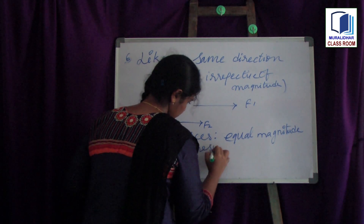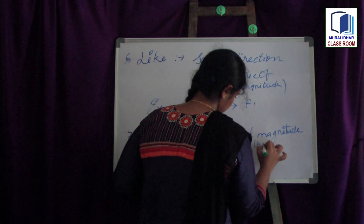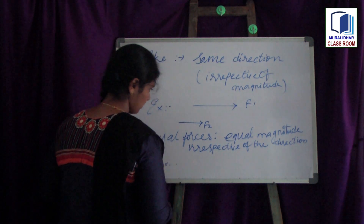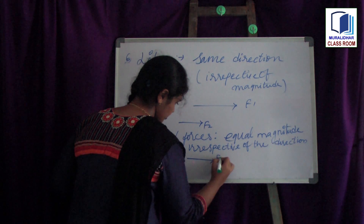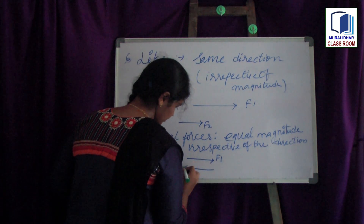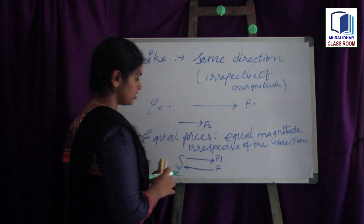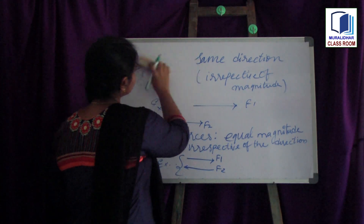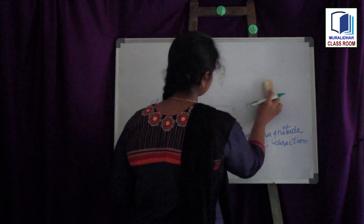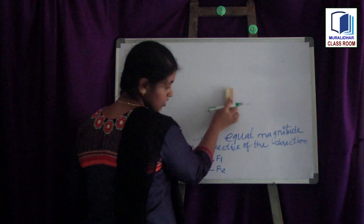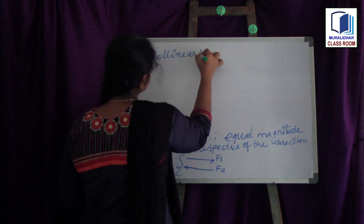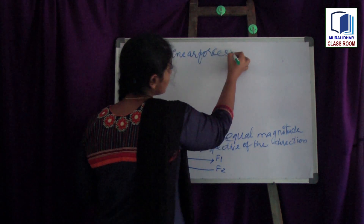Our seventh classification is equal forces. What is the difference between like and equal? Here, the forces with equal magnitude are said to be equal forces, irrespective of the direction. For example, this is force F1 and this is force F2, and both are with equal magnitudes — these are said to be equal forces.